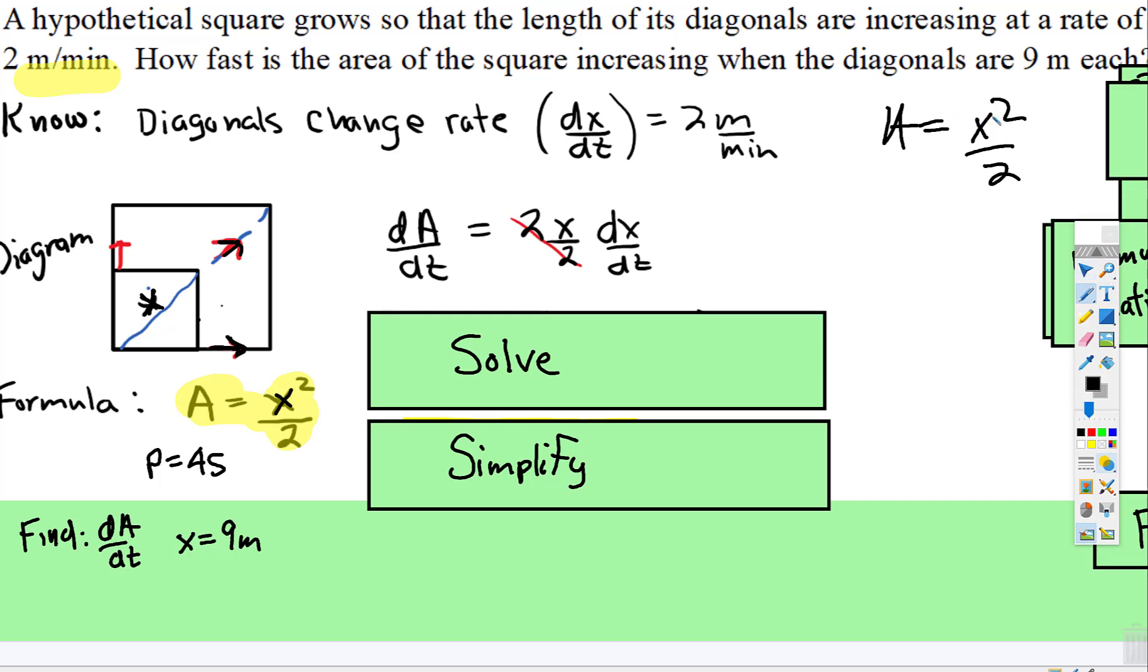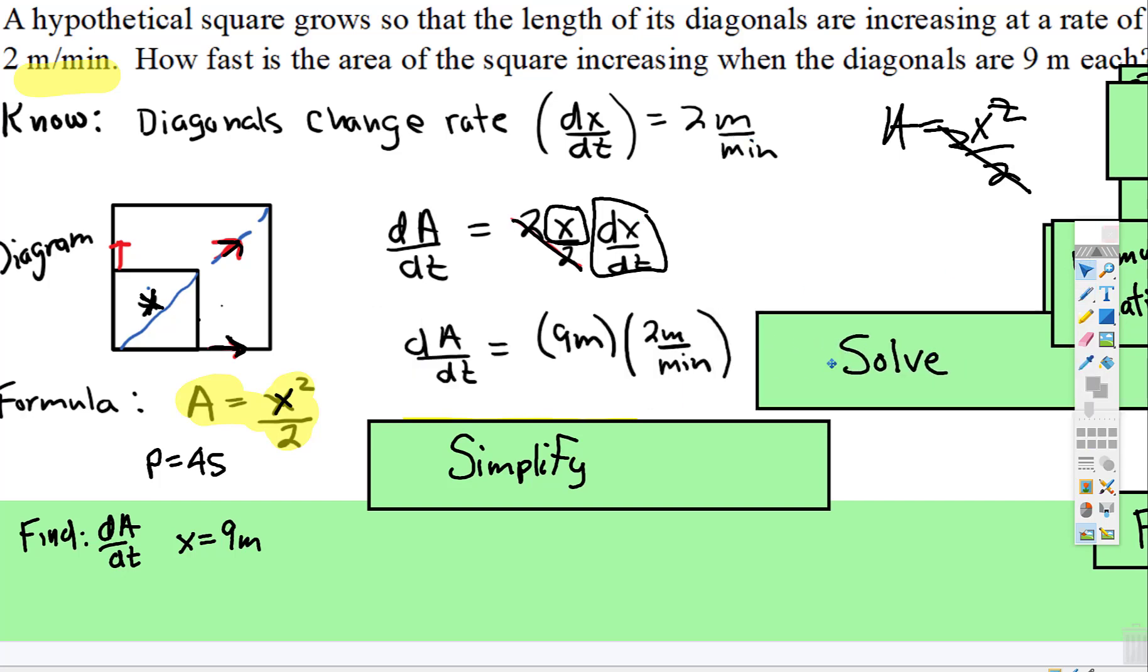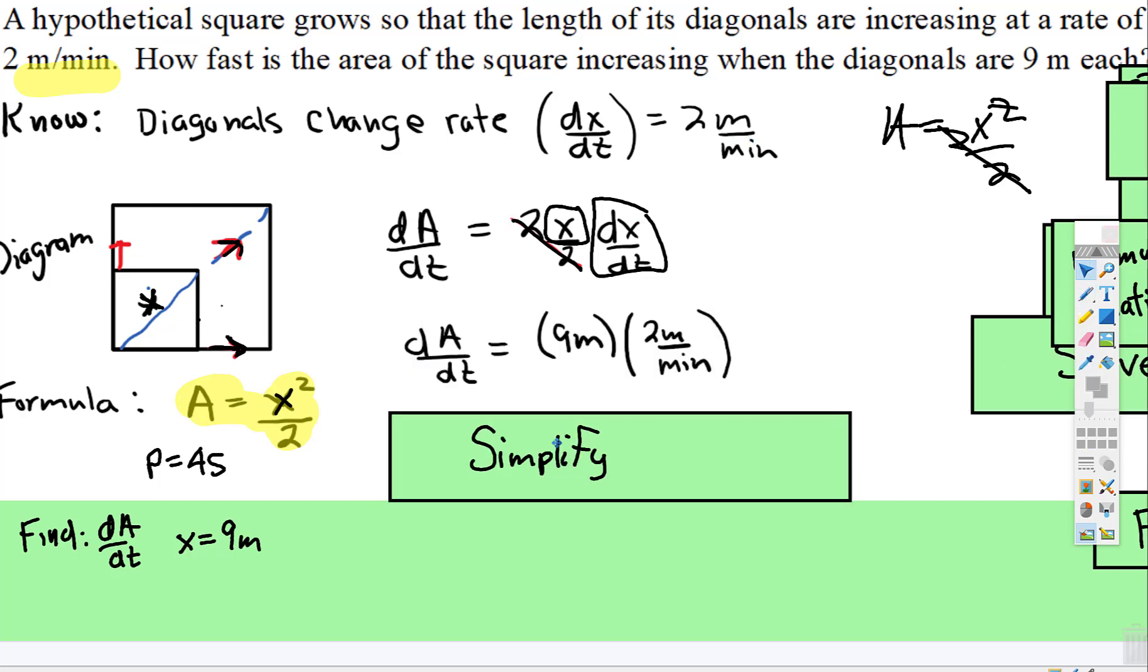So when we take the derivative of this, this 2 comes down in front, and then those cancel, and then we tack on dx/dt. Now we can put in the information that we know. We know the diameter length is 9 meters, and we know dx/dt is 2 meters per minute.